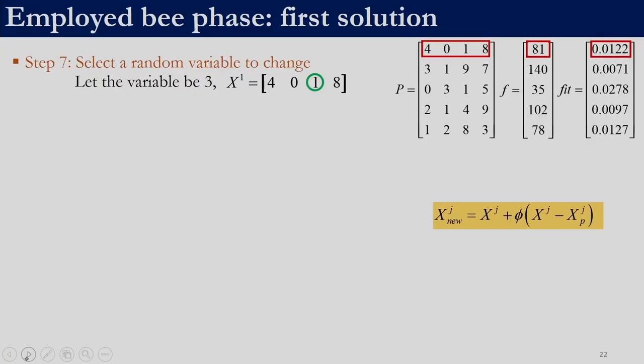The next step is to perform the employed bee phase. In the employed bee phase, all food sources get an opportunity to generate a new solution. The first solution [4,0,1,8] enters the employed bee phase. To generate a new solution, we need a partner randomly selected from the population, and we also randomly select a decision variable to change. In the ABC algorithm, we change only one of the D decision variables — even if there are 100 decision variables, only one is changed.